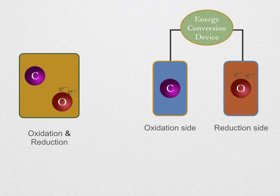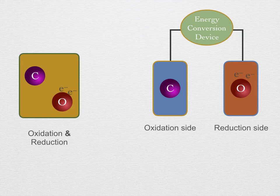We might use that current to charge a battery, run a car, or power a factory. Whatever we choose, we have converted the chemical energy contained in the bonds of the molecules participating in the redox reaction into another form of energy that we can use more effectively.